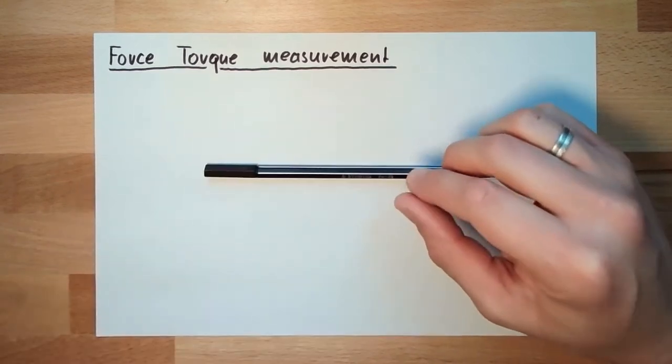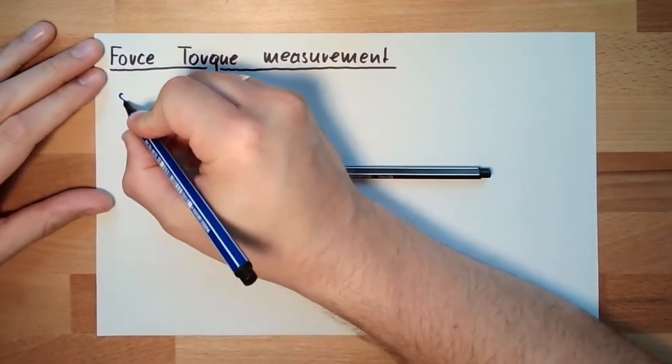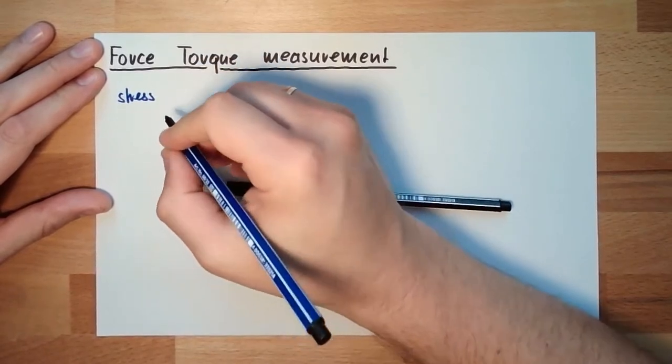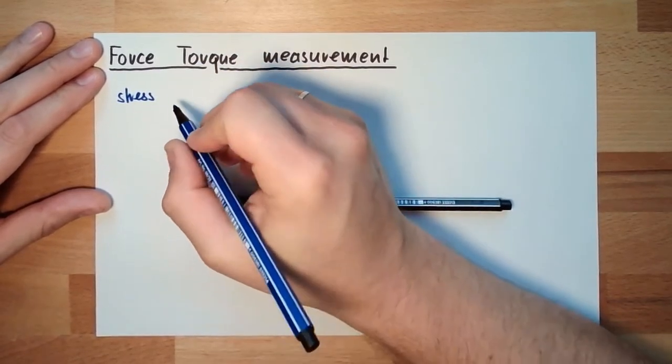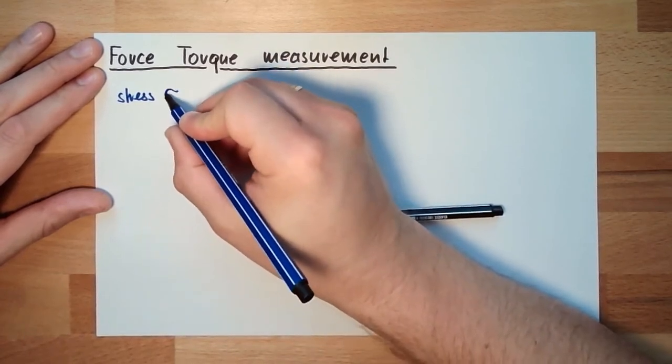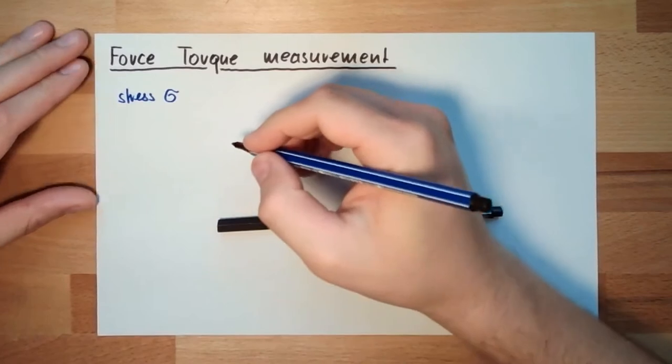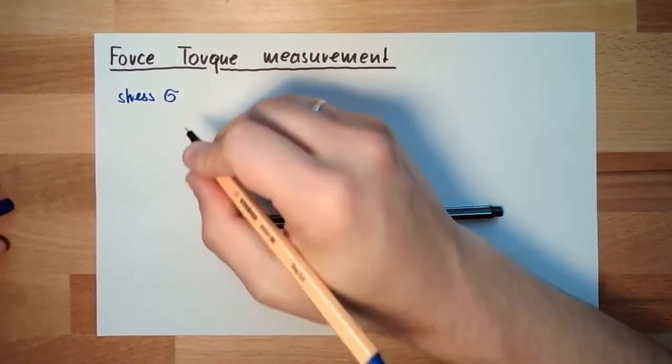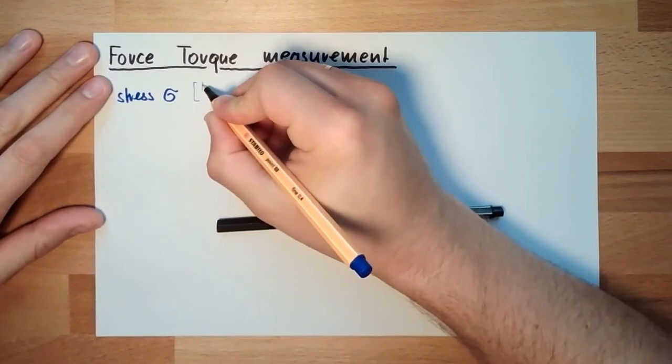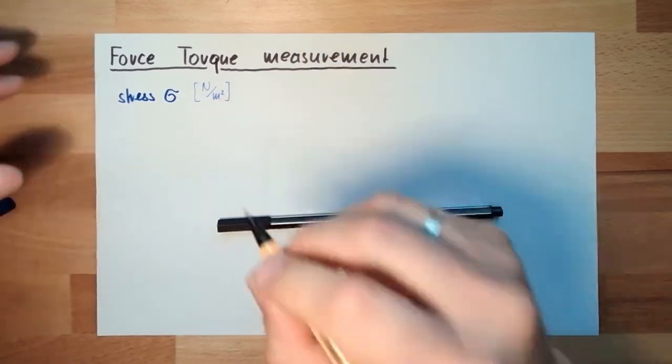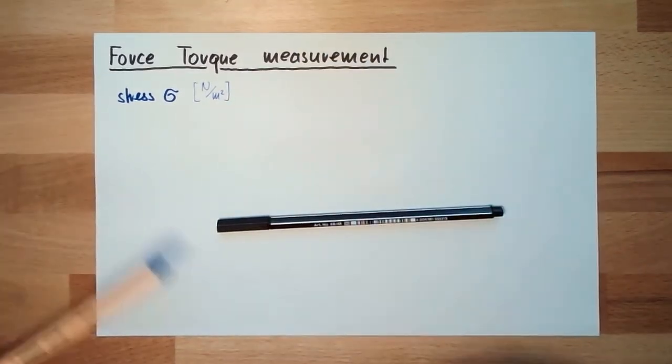The formula sign for stress is usually a small sigma. And of course, the unit is Newton per square meter. Usually Newton per square millimeter, but that's the SI unit.